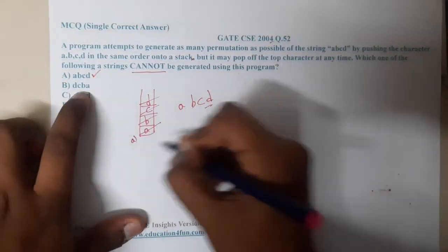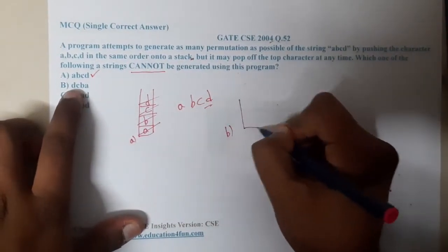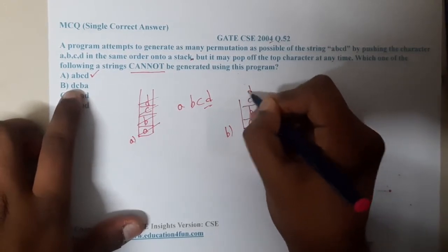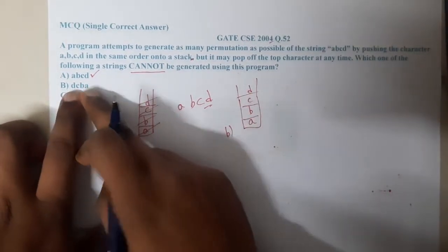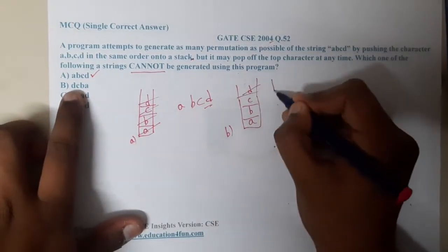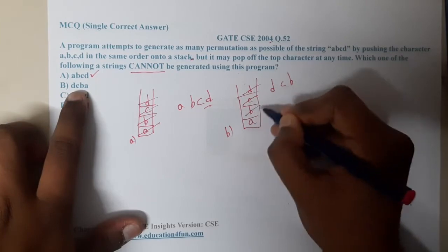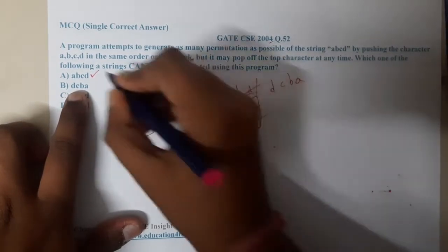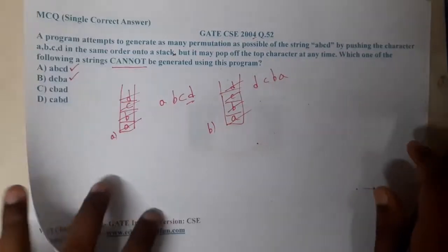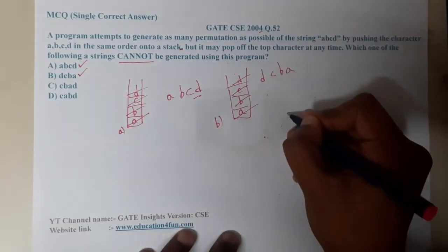For option B: you want d first, so we push a, b, c, d and then pop them. We get d, then c, then b, then a. So this sequence d, c, b, a is also correct.